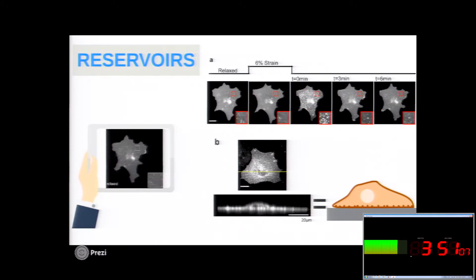We call them reservoirs. And as you can see from the confocal slices, they are distributed in the basal part of the cell.